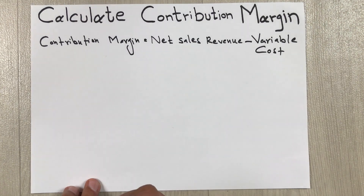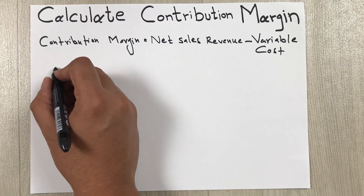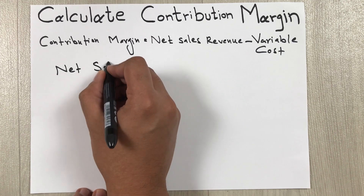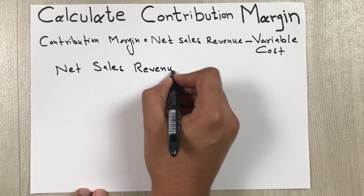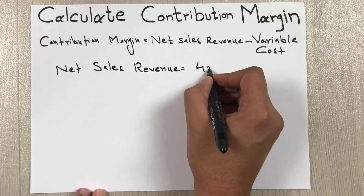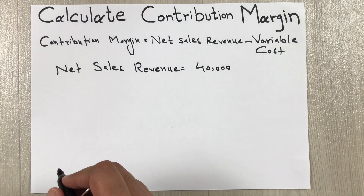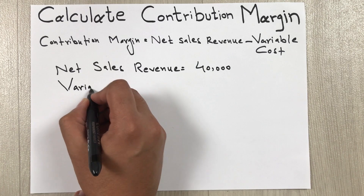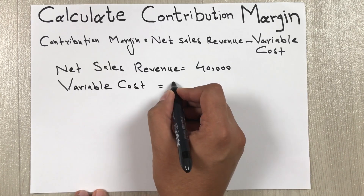So let's say the net sales revenue is forty thousand dollars, and the variable cost is fifteen thousand.